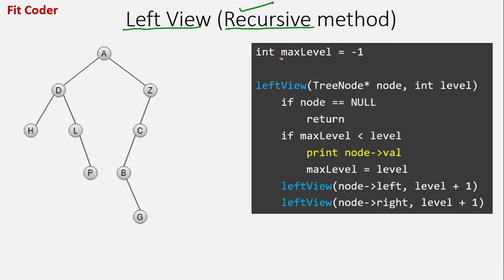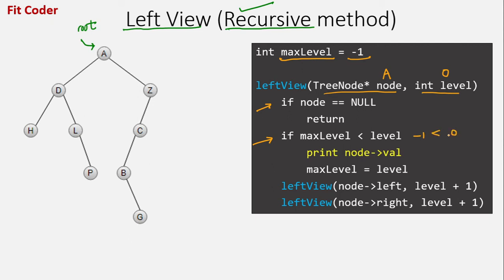We keep a variable max_level in which we store the maximum level attained so far, initializing it with minus 1. We have a function left_view which takes two parameters: a node of the tree and a variable level. The first call will be for parameters A and 0, because A is the root node and the level of the root node is 0. We check if node is null — node is A, it is not null. Then we check if max_level is less than level: max_level is minus 1 and level is 0, so this is true. We print the value of node, which is A, and then set max_level equal to level, so max_level becomes 0.